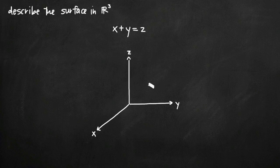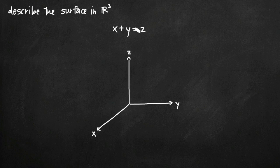I've drawn a three-dimensional coordinate system based on the right-hand rule. In this particular video, what we're going to be doing is describing the region defined by the equation x plus y is equal to 2. The first thing we need to realize about this equation is that there's no z-variable involved — we only have x and y.